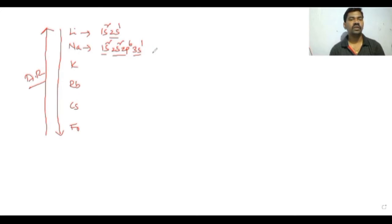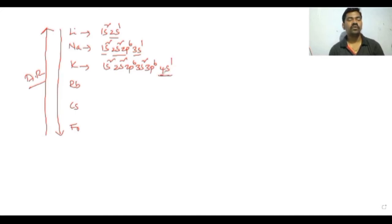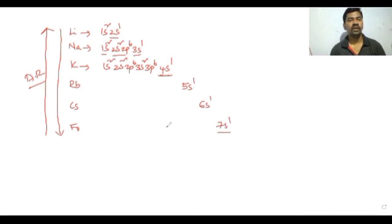Potassium has configuration 1s2, 2s2, 2p6, 3s2, 3p6, 4s1 — so the last electron is in the fourth shell. The next elements have their last electrons at 5s1, then 6s1, then 7s1. This electron configuration pattern shows why atomic radius increases down the group.